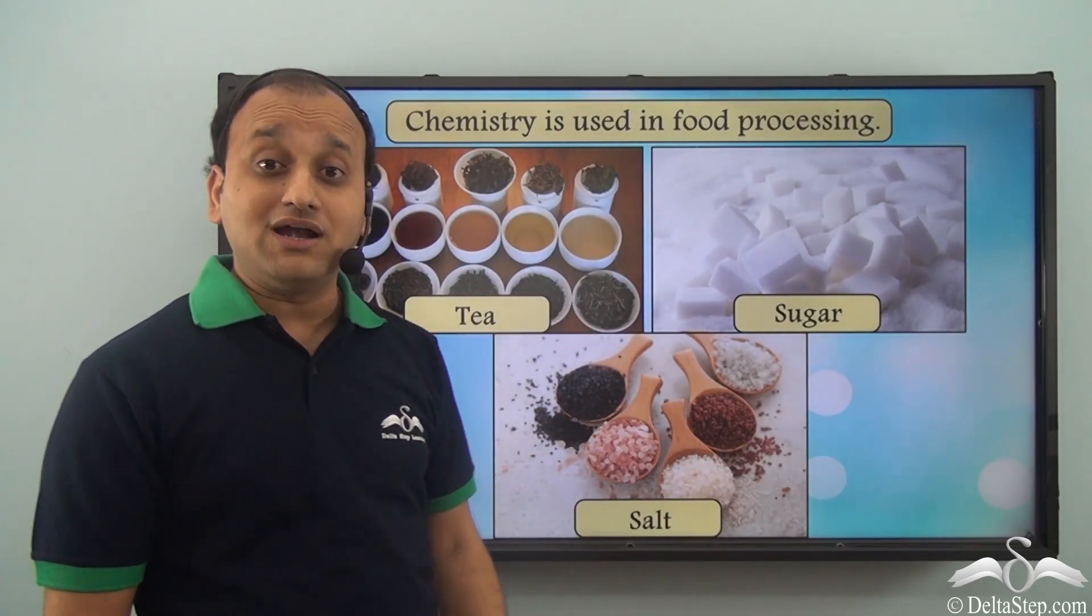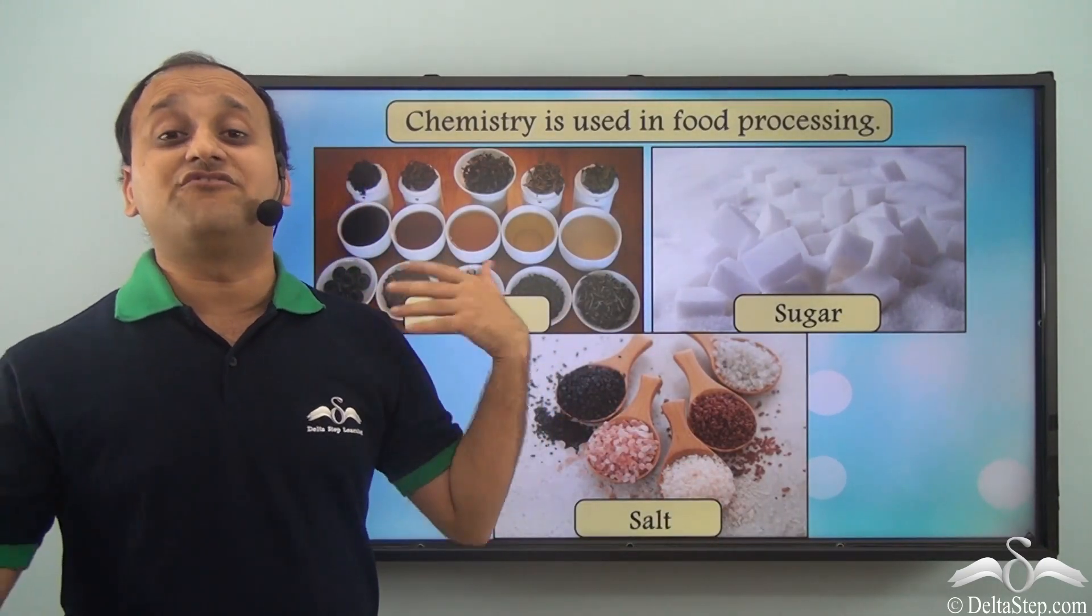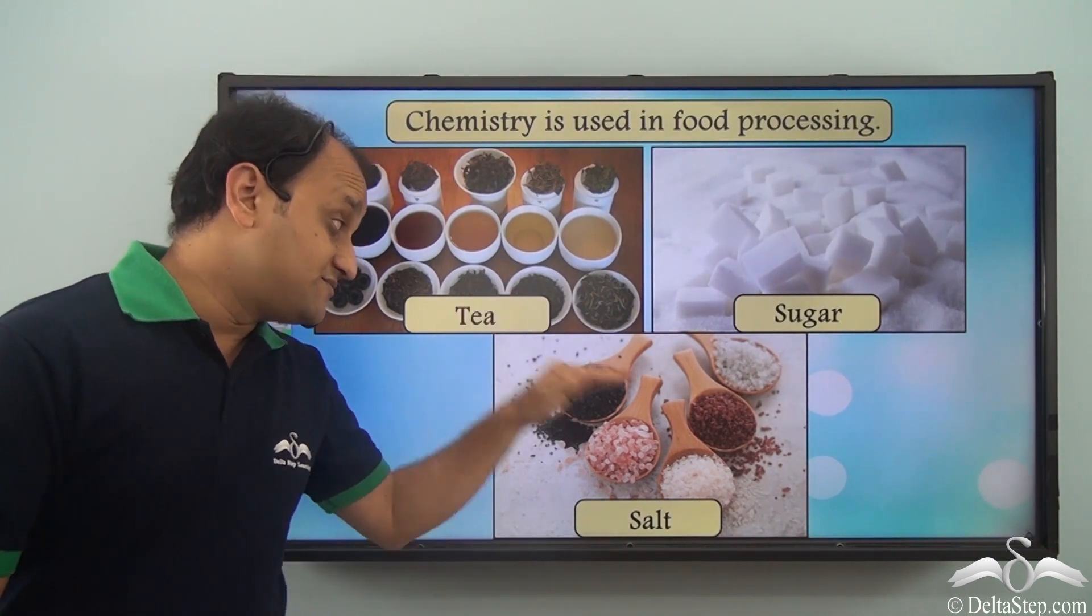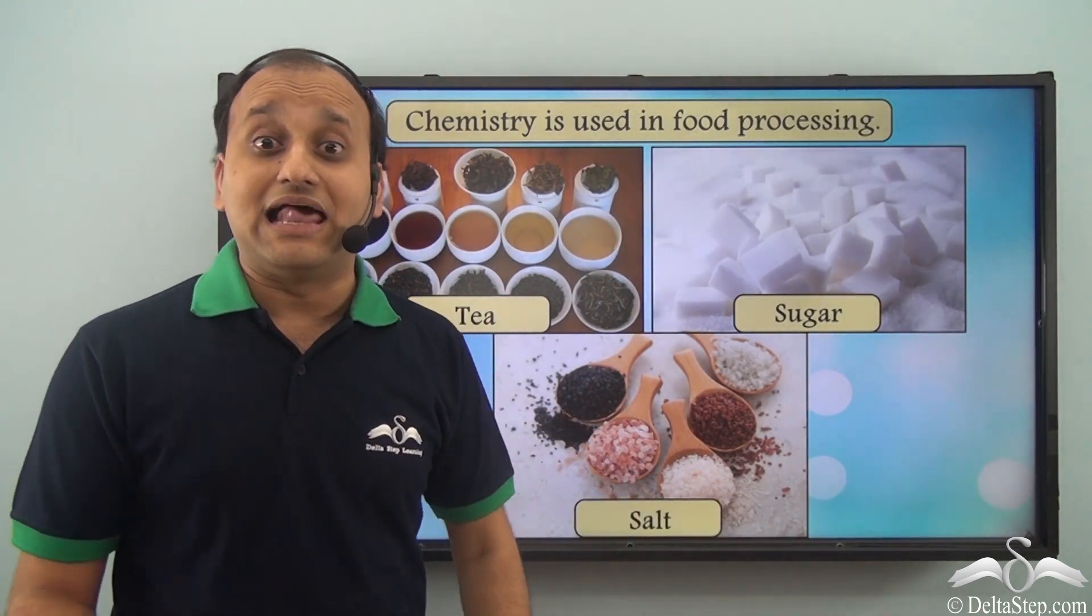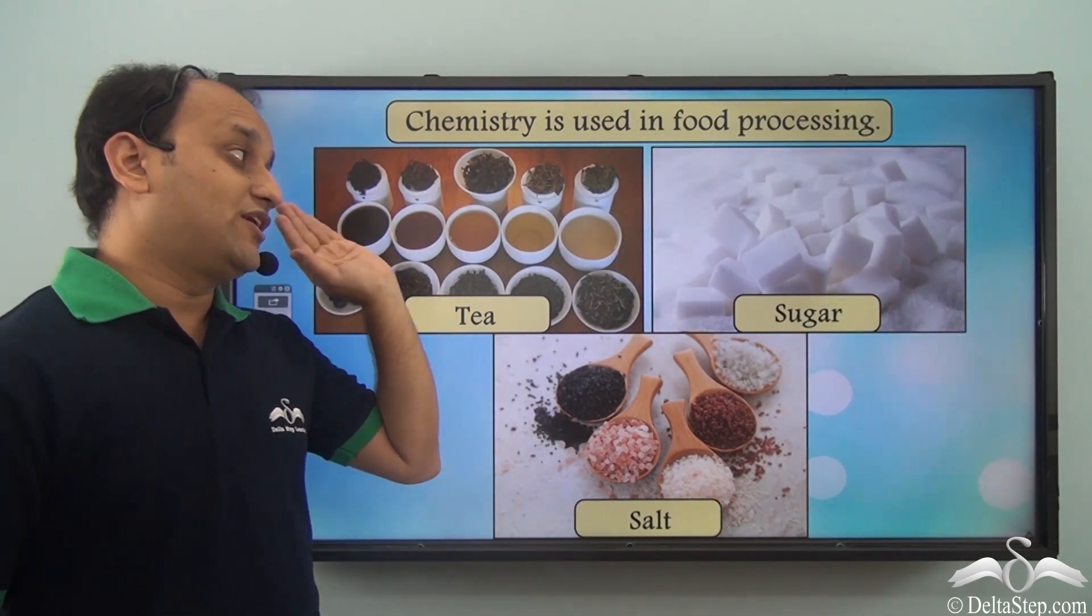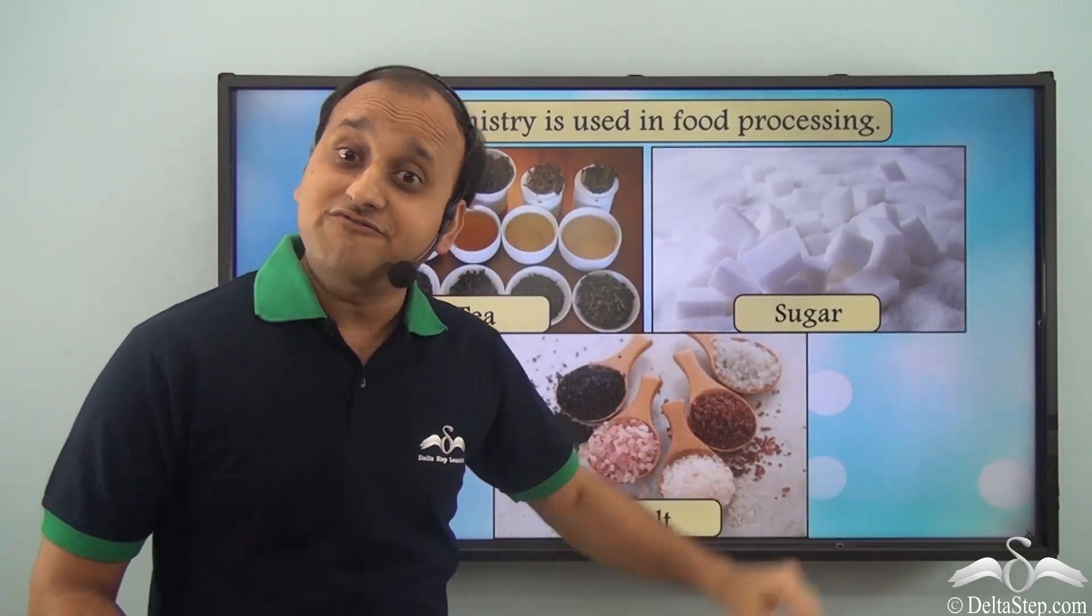Similarly, even the salt comes naturally in different forms. And from that form it comes into the edible form with the help of different chemical steps. So without chemistry you cannot even process food.